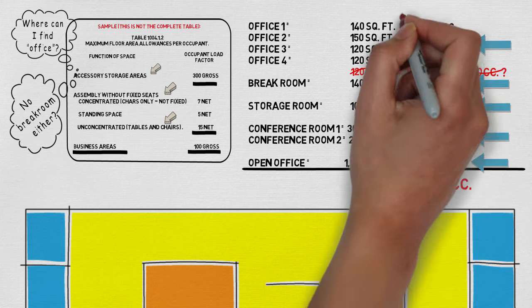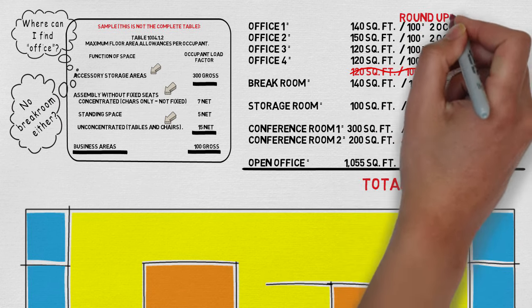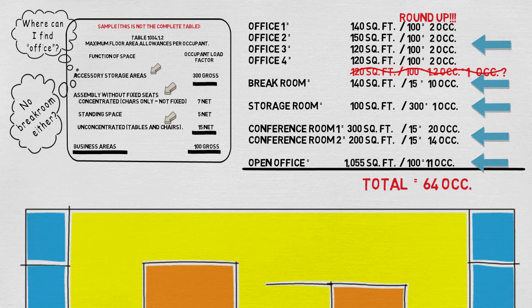In most jurisdictions that I've worked with, they always round up. That is why I typically round up. And if you see here, all my rooms are rounded up and the total is 64 occupants. And just like that, now you have your total suite occupancy load. Not that hard, is it?